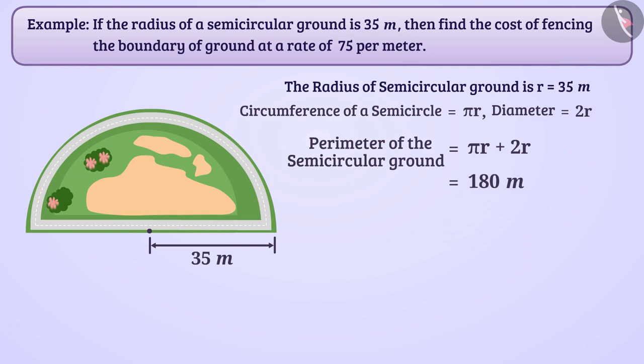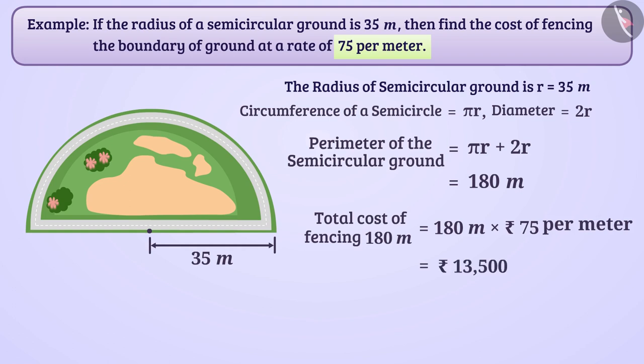Since the cost of fencing is Rs 75 per meter, therefore, the total cost of fencing 180 meter will be 180 meter × Rs 75 per meter = Rs 13,500.